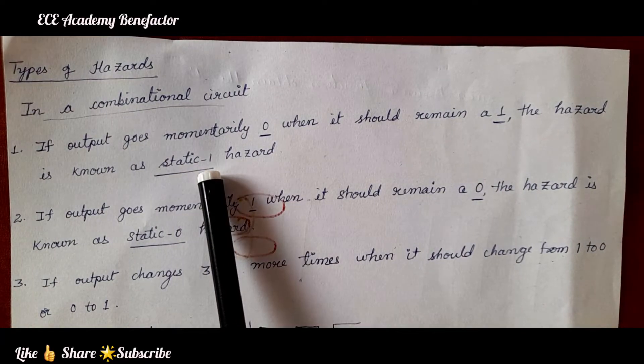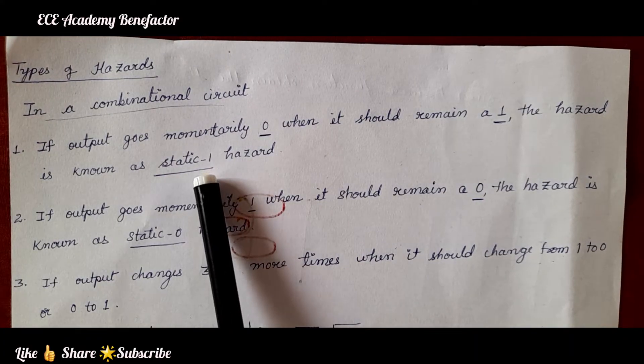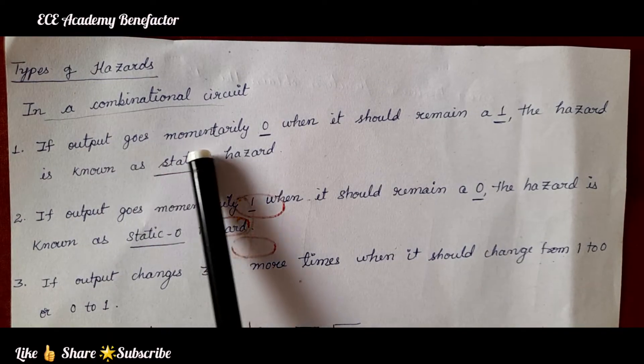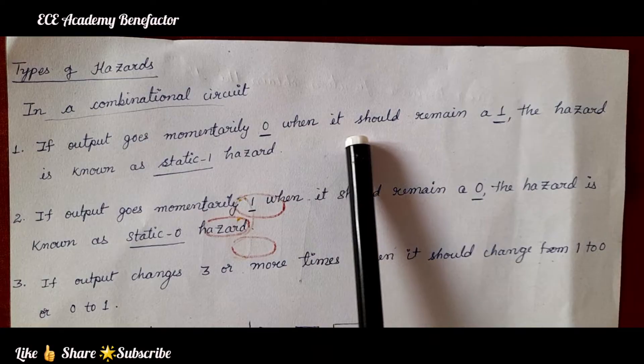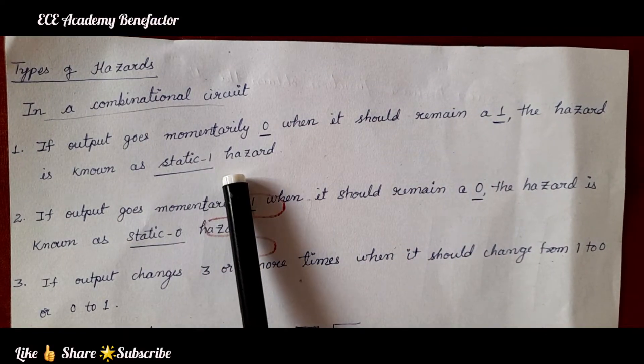Static 1, the output state should be 1, but it is changing momentarily to 0. If the output goes momentarily 0 when it should remain at 1, the hazard is known as static 1 hazard.